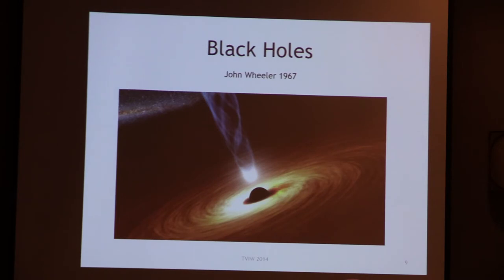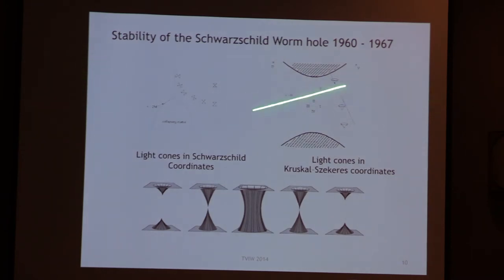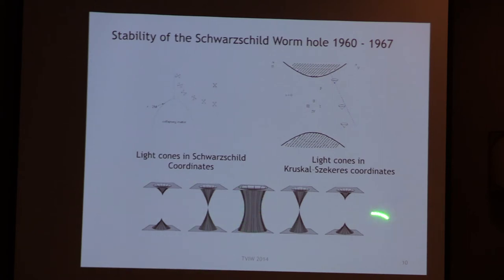John Wheeler coined the word 'black holes' in '67. Science fiction authors were using these as transports, but they don't work because if you go into one, you die. The wormholes that were created — really Einstein-Rosen bridges, which came to be called Schwarzschild wormholes — are dynamic. If you try to go into one, they pinch off. In fact, if you push a photon through, it perturbs the background so that it dynamically closes off. You can't even transmit information through this kind of thing.